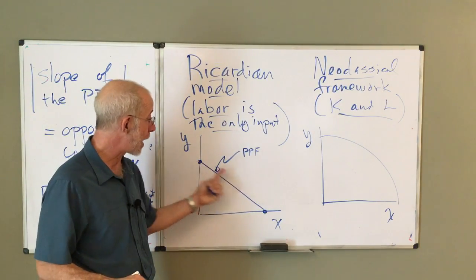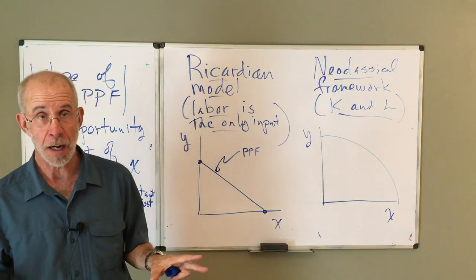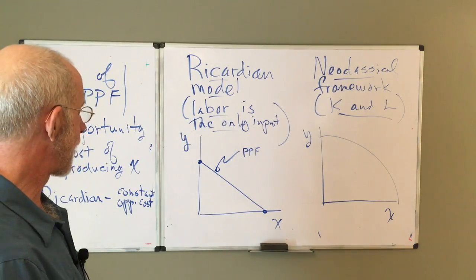If I produce only Y, I only produce X or something in between, the opportunity cost remains unchanged. Again, we'll go into the reasons for that in another video.